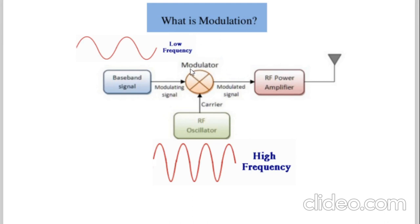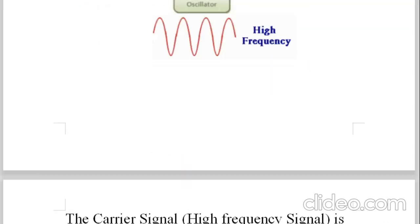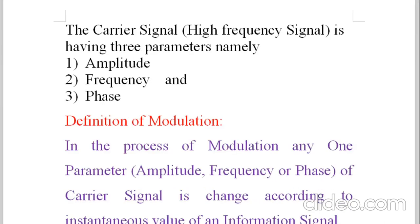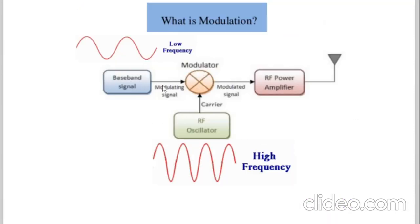Now our focus is on exactly what the modulator is doing. The carrier signal, which is a high frequency signal, has three parameters: amplitude, frequency, and phase. Any signal — whether sine wave, square wave, or triangular wave — always has these three parameters.